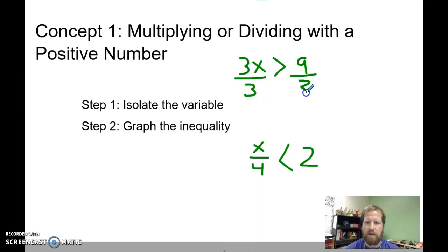Divide by 3, divide by 3, cancel, x, and our sign stays the same. 9 divided by 3 is 3.